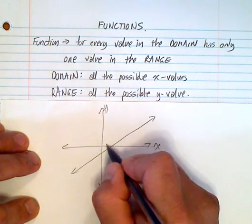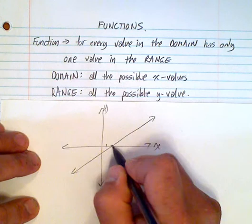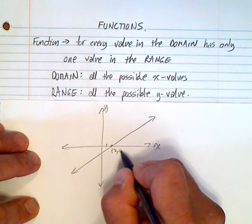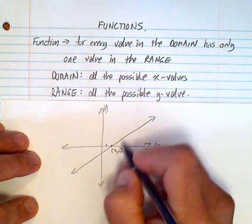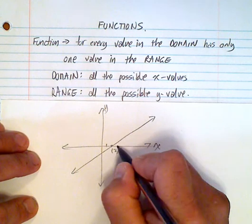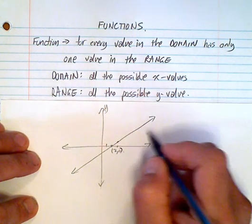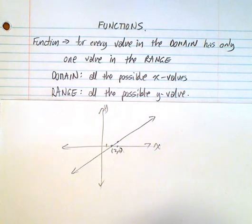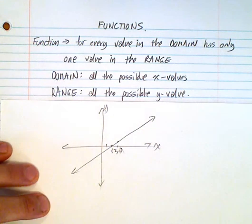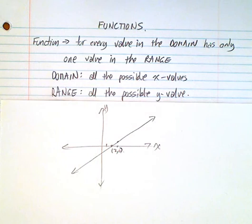Now, you can see that every x value has a y value, so this point right here would be 2, 0. If you look at another point right here, it only, let's say 3, 1. So, every x value has only one y value.